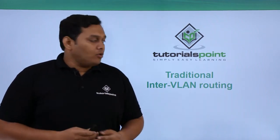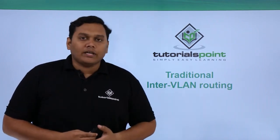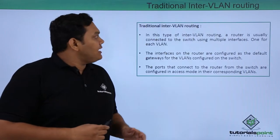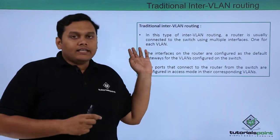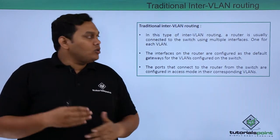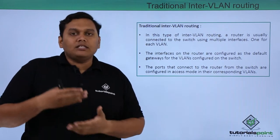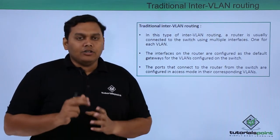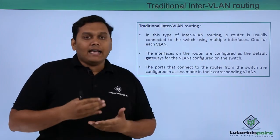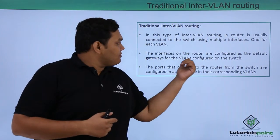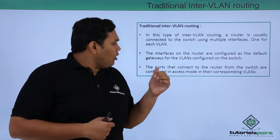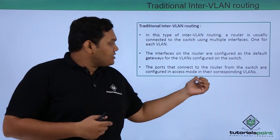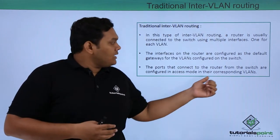In this video, we are going to discuss about traditional inter-VLAN routing. As one of the ways of inter-VLAN routing, this traditional inter-VLAN routing is established such that a router is usually connected to a switch using multiple interfaces, one each for one VLAN. The interfaces on the router are configured as the default gateways for VLANs, and the ports connecting the router from the switch are configured in access mode in their corresponding VLANs.